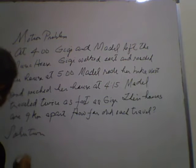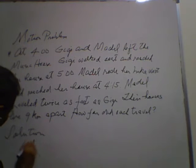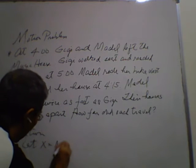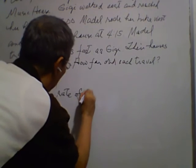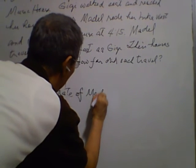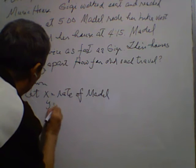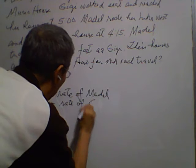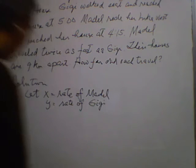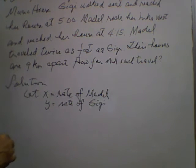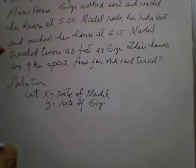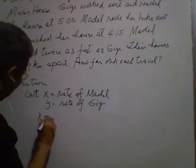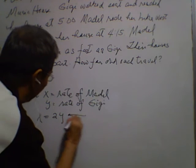First, we are going to represent the unknowns by variables. We let X be the rate of Madel and Y the rate of Gigi. The problem also states that Madel traveled twice as fast as Gigi, so X is equal to 2Y. This is our equation 1.